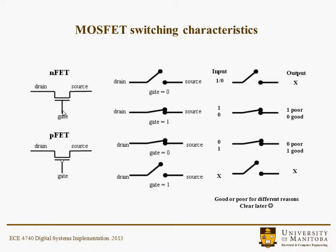Here are some switching characteristics you're probably familiar with from electronics courses. For our NFET or NMOS device: when the gate is 0, the switch is open — there's no contact between input and output, so the output is indeterminate. When there's a 1 on the gate, the switch is closed. If you have a 1 on the input, you get a poor 1 on the output — that's a threshold voltage effect. However, if you have a 0 on the input, you get a very good 0 on the output. That's why N-type devices are good for pulling an output low.